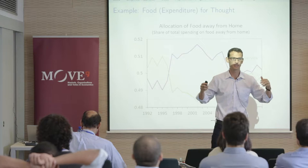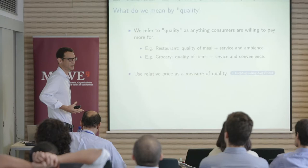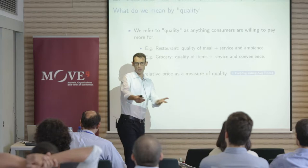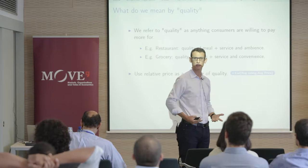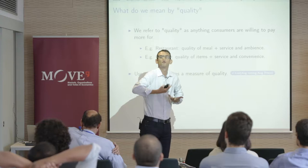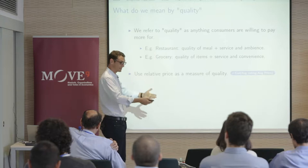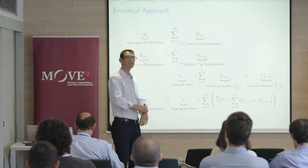I'm going to refer to quality as anything that consumers are willing to pay for. So in the grocery example, maybe you enjoy going to Whole Foods and someone can talk to you about Shakespeare. Maybe the actual meat you're getting is organic beef. I'm going to lump all of those together — I cannot distinguish between them. I'm going to use prices that I observe, or proxies for prices, as my measure of quality. That's the empirical approach.